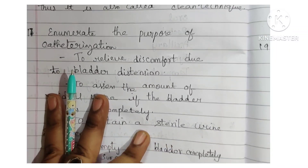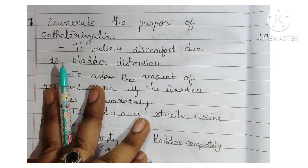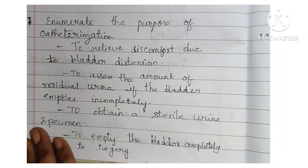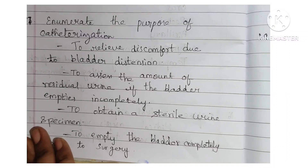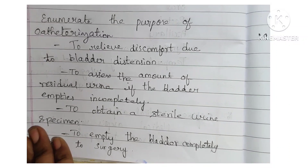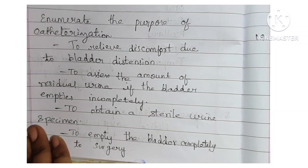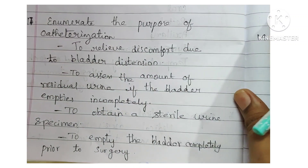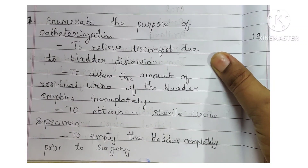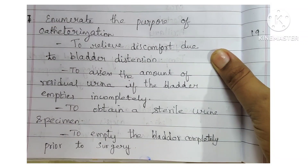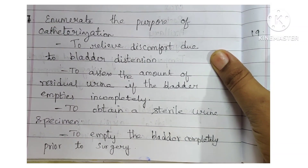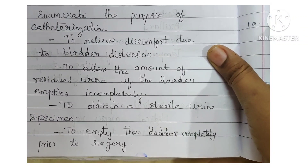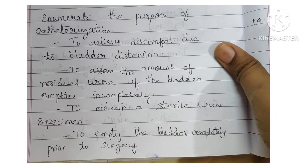Next: enumerate the purposes of catheterization. To relieve discomfort due to bladder distension, to assess the amount of residual urine if the bladder empties incompletely, to obtain a sterile urine specimen, and to empty the bladder completely prior to surgery.